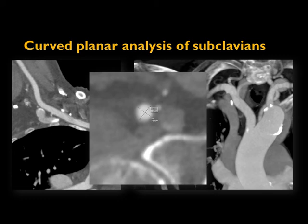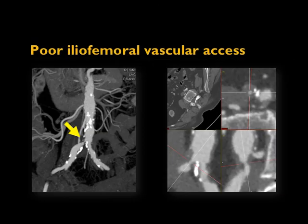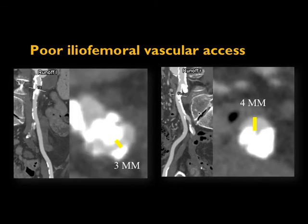We provide subclavian measurements only when needed — if the iliofemoral route looks good, there's no need to assess the subclavian. Here's an example of a case with very poor iliofemoral access. An important note: if you identify a discrete lesion, this patient might be able to receive a stent to allow sheath insertion. However, a patient with extensive bilateral calcification would be a much harder stenting candidate and may need subclavian or another alternative access route.